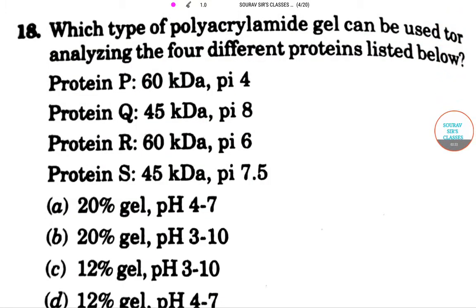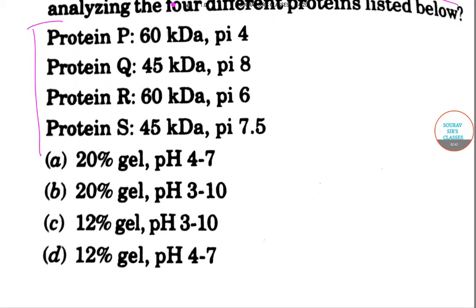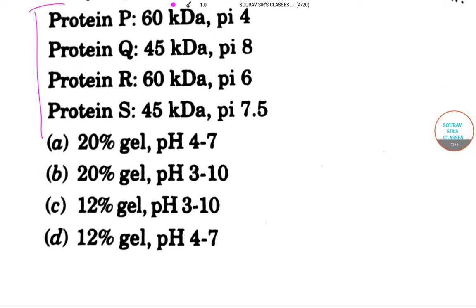Moving to the next question about the polyacrylamide gel, also called PAGE, to be used for analyzing the four different proteins listed below. The correct option will be option C as it says it is 12% gel and pH 3 to 10.